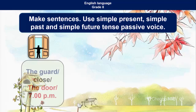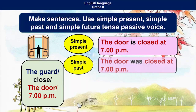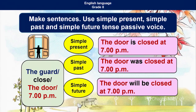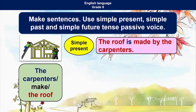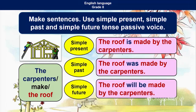The same sentence without the agent — the door is closed at 7 PM (simple present), the door was closed at 7 PM (simple past). With the agent and without the agent, whatever it is, only the be verb changes according to the tense. Another example: the carpenters make the roof. Simple present: the roof is made by the carpenters. Simple past: the roof was made by the carpenters. Simple future: the roof will be made by the carpenters.